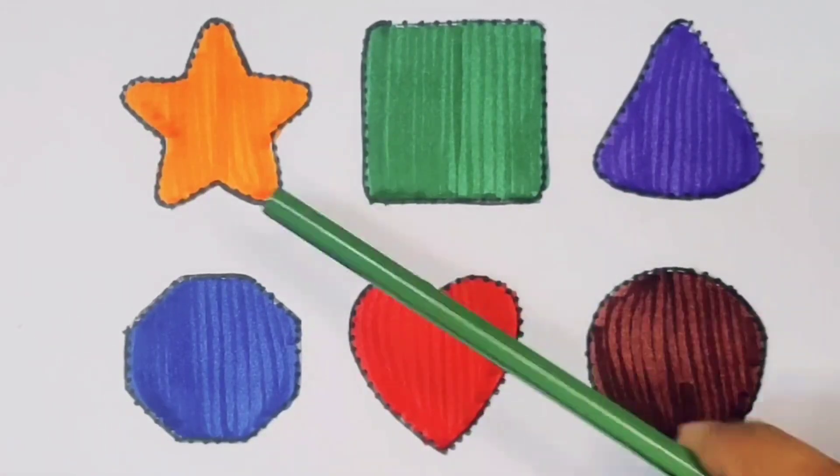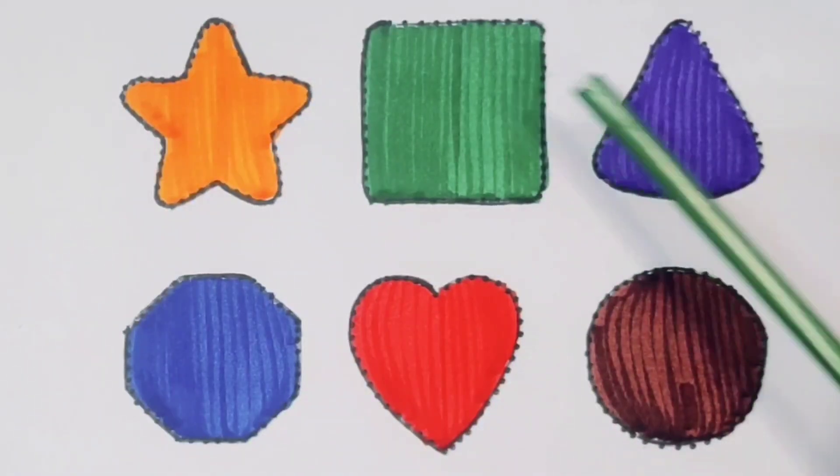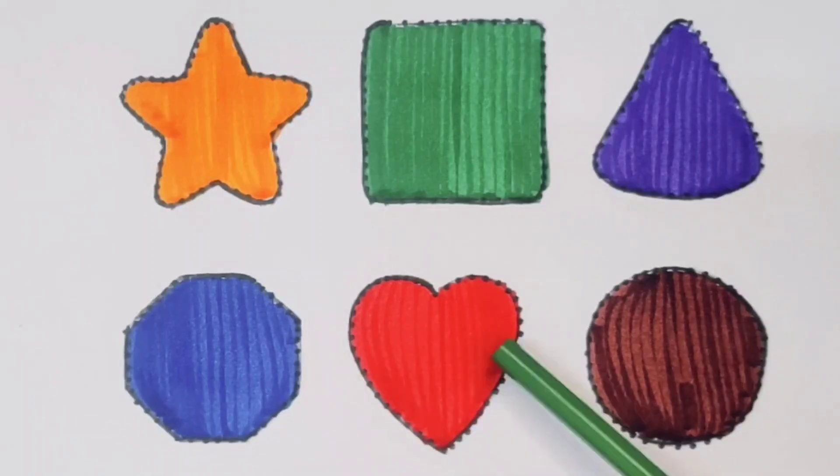What did we learn? We learned orange color star, green color square, purple color triangle, blue color decagon, red color heart, and chocolate color circle.